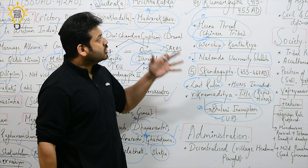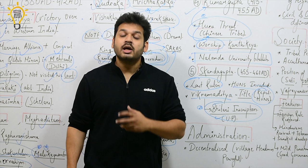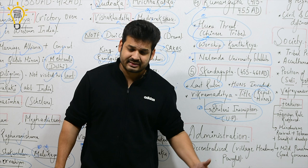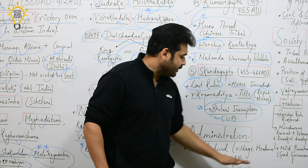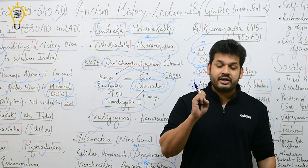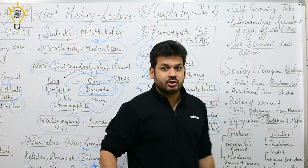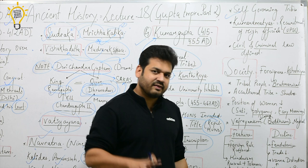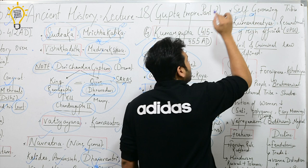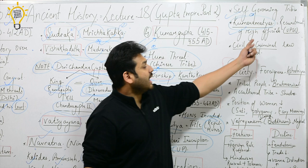Looking at the administration of the Gupta Empire, it followed a decentralized system. For example, village headmen had considerable local powers. Self-governing tribes within the empire are another example of this decentralization. There was also a body that recruited civil servants and high officials, similar to the UPSC today.